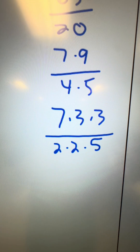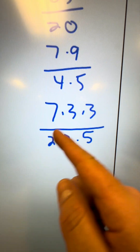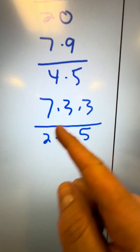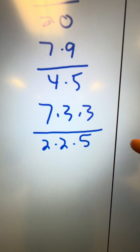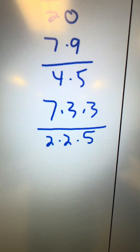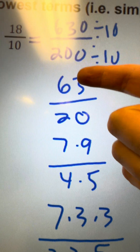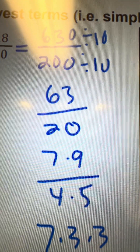At this point you can see that they don't have any common factors, so that means my final answer would actually be 63 over 20.